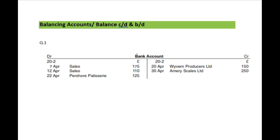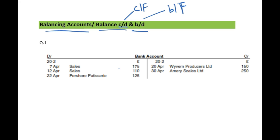Welcome back to accountinglecture.com. In this video I'm going to show you balancing of accounts — how to do balance c/d and b/d. C/D means carried down, b/d means brought down. Very often it is also known as c/f (carried forward) or b/f (brought forward). Now, bank account is generally a debit account — we assume the business has money in the bank, but it can be overdrawn as well. The rule for balancing is you need to get the total of both sides.